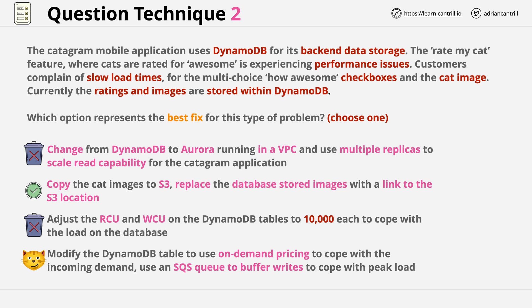This leaves us with two potential answers: answer 2 and answer 4. Answer 4 is possible, but not ideal. Answer 2 is possible and it seems ideal. So I'll select answer 2 as my correct answer to this question. If you selected a different answer, it's time to evaluate the question and the answers to understand why — you need to get into the habit of correcting assumptions which lead you to select bad answers. That's where the value of this lesson series comes from. Go ahead, complete the lesson, and I look forward to seeing you in the next one.